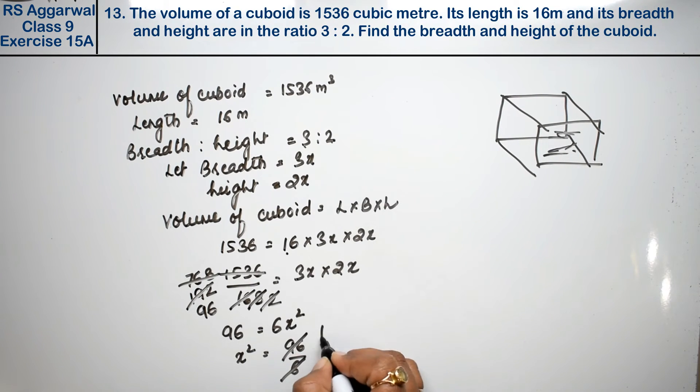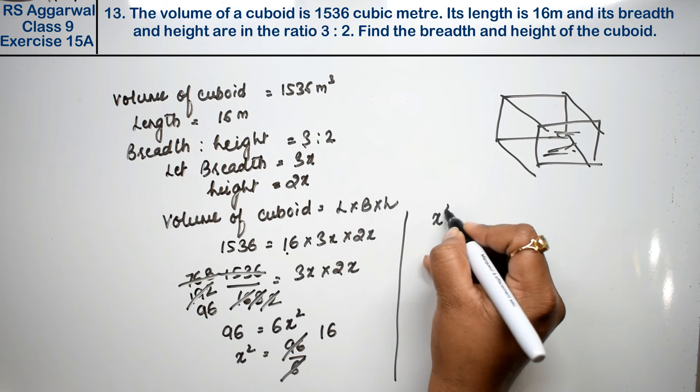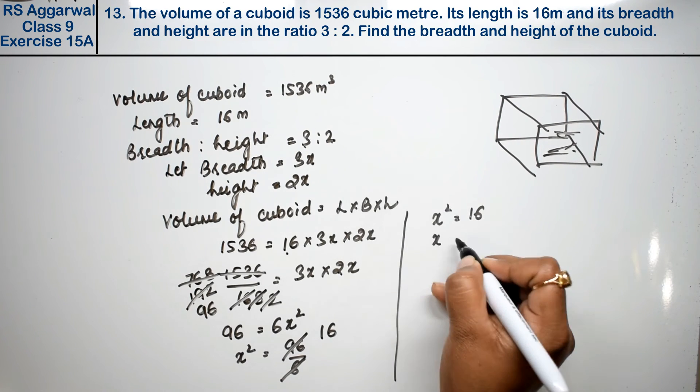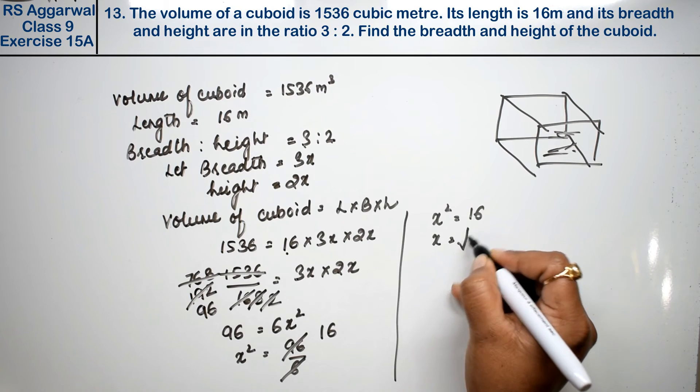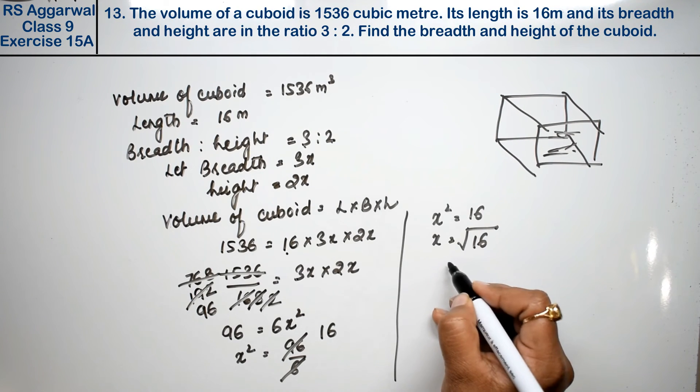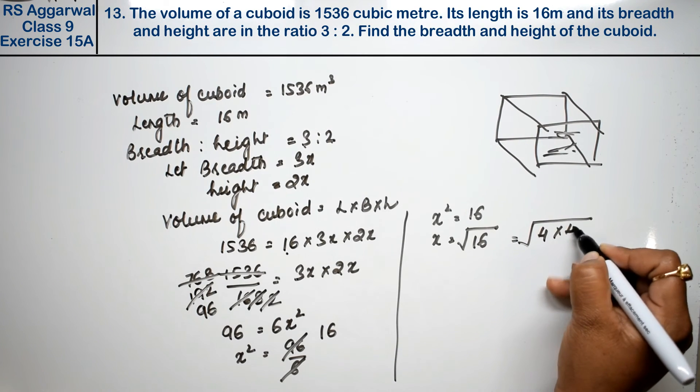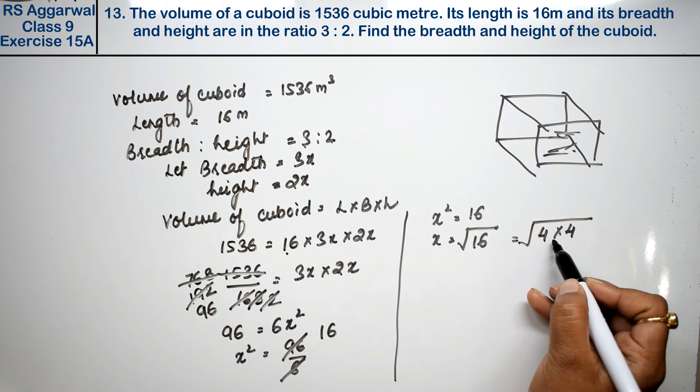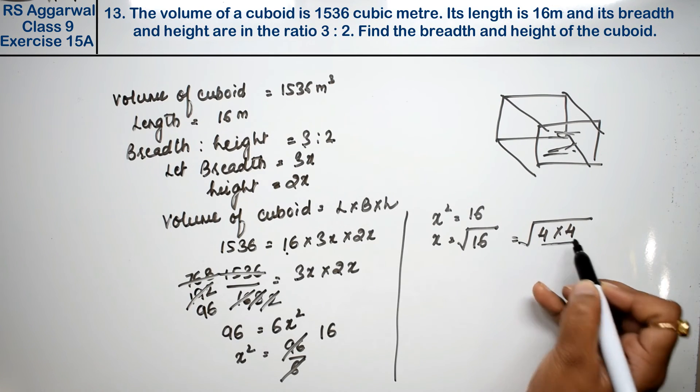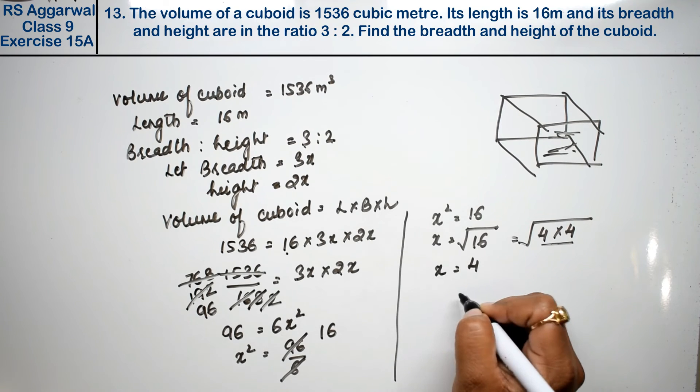So 6 times 6 is 36. Now x square value is 16. This square root has become square root. 16, what can we write? 4 into 4. Square root means 2 pair, so 2 pair will become 2. So x value is 4.